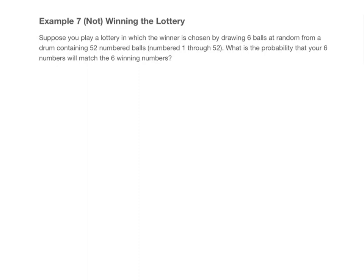We just need our six numbers to match the six winning numbers, and this can happen in any order — it doesn't have to be the same order as the one in which the numbers were picked. There are too many different possibilities here to list them all out, so that's a clue to use some sort of a counting rule.